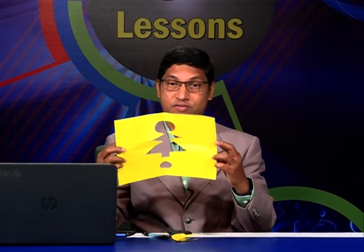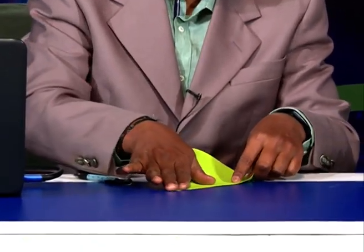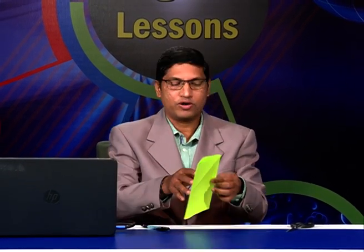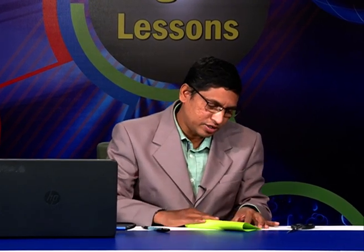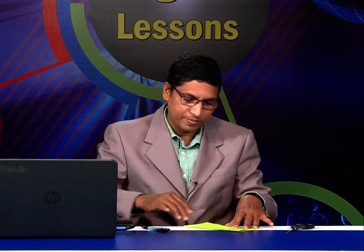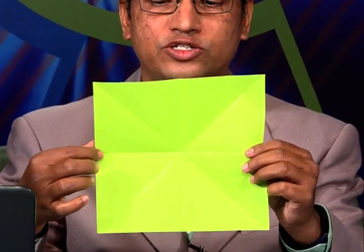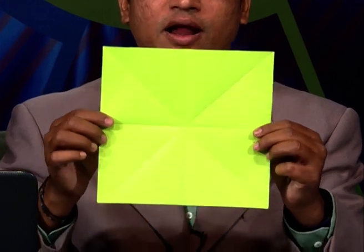Now let us perform the same with a square sheet. Take the square sheet and fold along its diagonal — it exactly coincides, giving one diagonal line of symmetry. Folding the other diagonal also gives a coinciding result, so that's another diagonal line of symmetry. Together with one horizontal and one vertical, the square has four lines of symmetry overall.